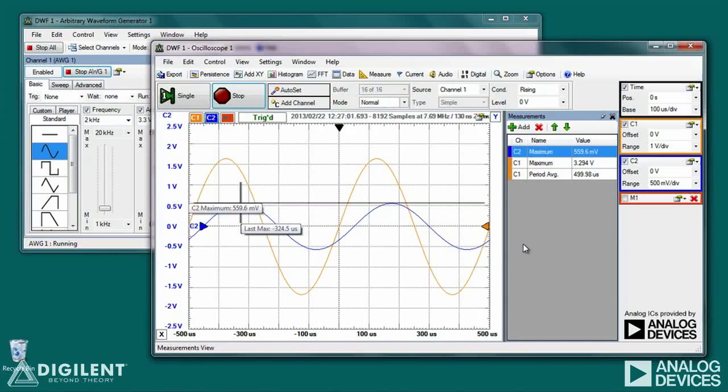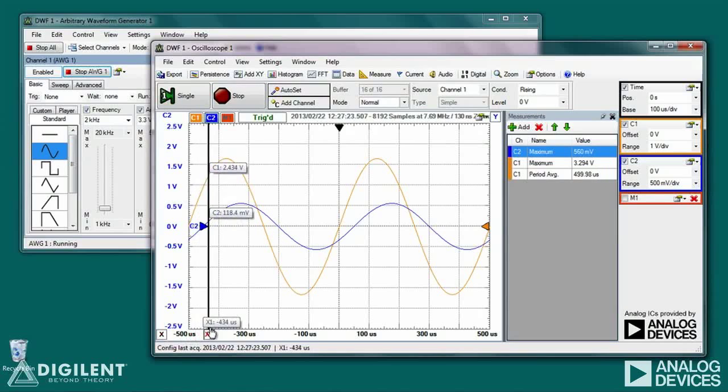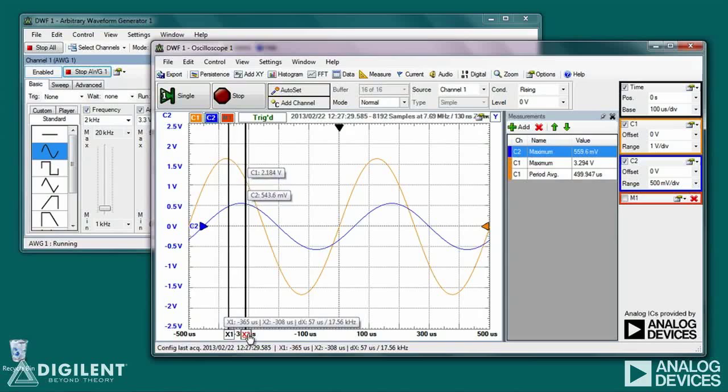In order to determine our phase difference, we need the time delay between the signals and the time period of either signal. Since both signals are the same frequency, we only need to measure one of them. We can get the period of the signals from our measurement. Just add a measurement giving the average period of one or the other signal. To get the time delay, I'll use cursors. Let's base our time delay on the maximum value of the two signals. Setting one cursor at the maximum value of channel 1 and the other cursor at the maximum value of channel 2 gives us a time delay between the two. To get the phase difference, just divide this time delay by our period and multiply that result by 360 degrees.